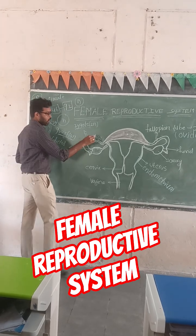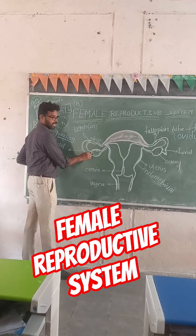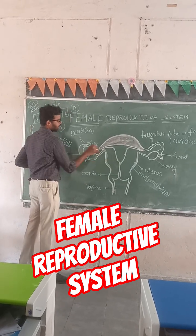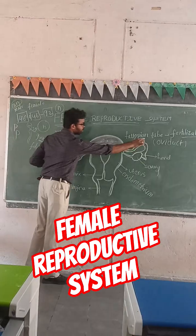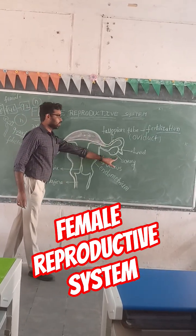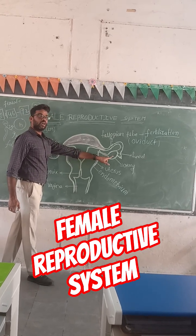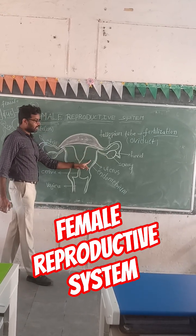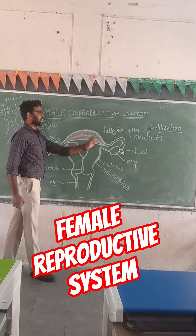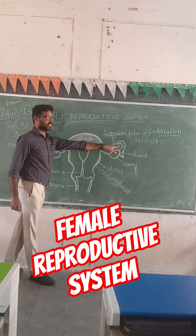After releasing of the ovum, it enters into the fallopian tube section. This also contains some funnel-like structures. The tube which connects the ovaries and uterus is called the fallopian tube — it is the connecting part between the ovary and uterus. Ovaries produce the ovum, which finally enters into the uterus. The fallopian tube is a muscular structure with no bones.